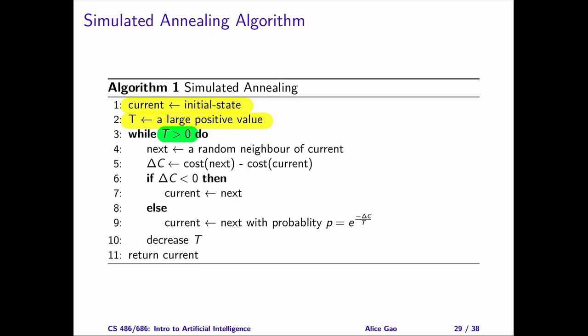Choose a random neighbor. Calculate the cost difference between the neighbor and the current state. Decide whether we want to move to the neighbor or not. If the neighbor is an improvement, we will move to it for sure.